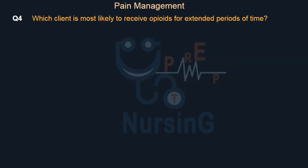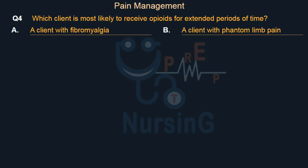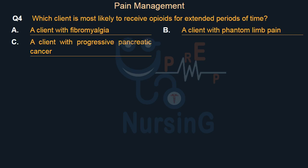Which client is most likely to receive opioids for extended periods of time? Option A: A client with fibromyalgia. Option B: A client with phantom limb pain. Option C: A client with progressive pancreatic cancer. Option D: A client with trigeminal neuralgia.